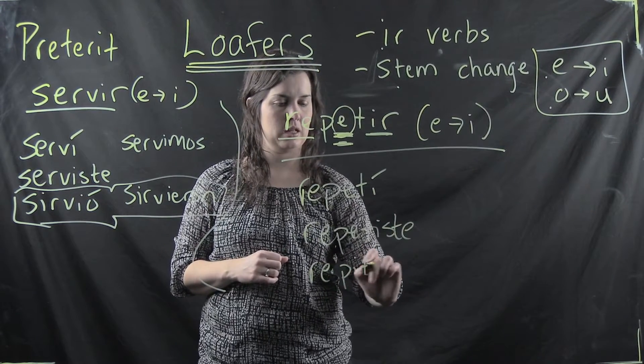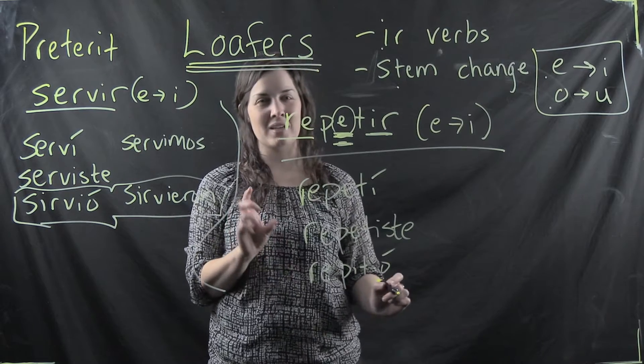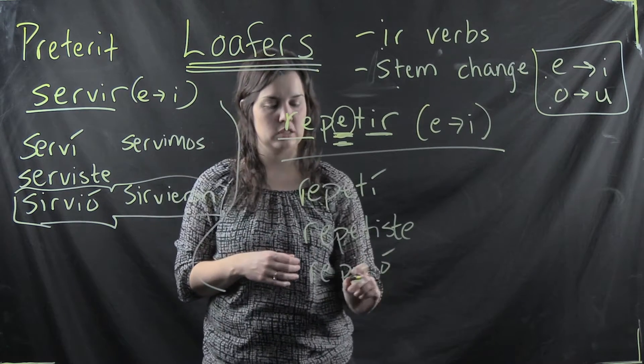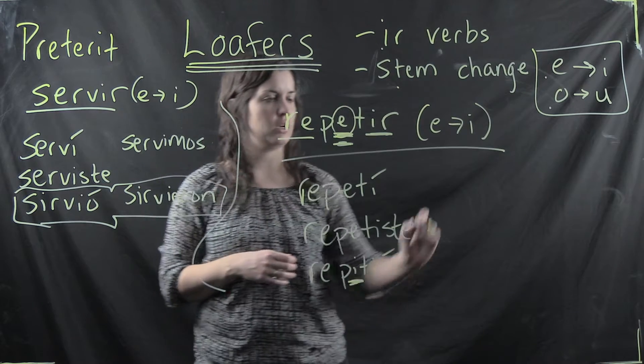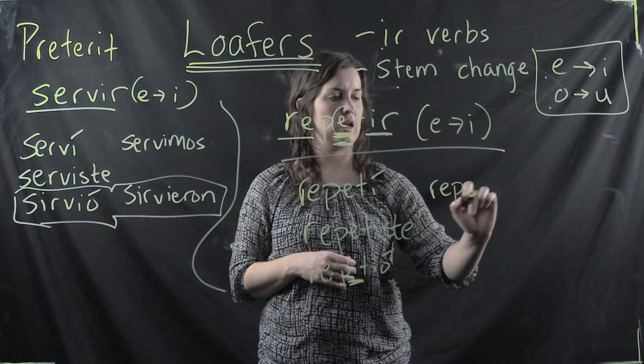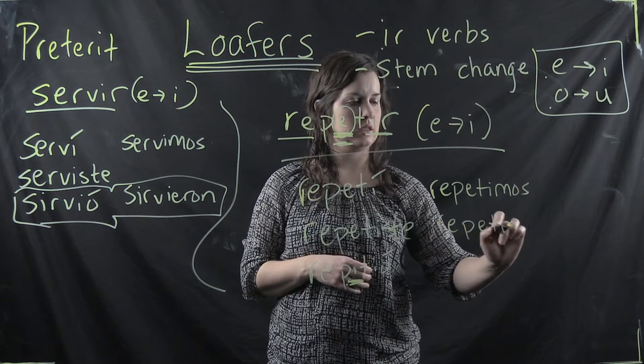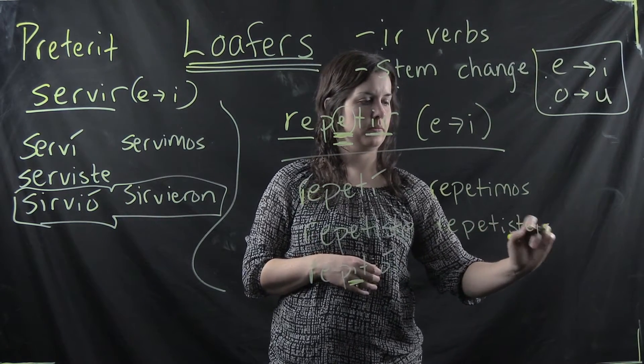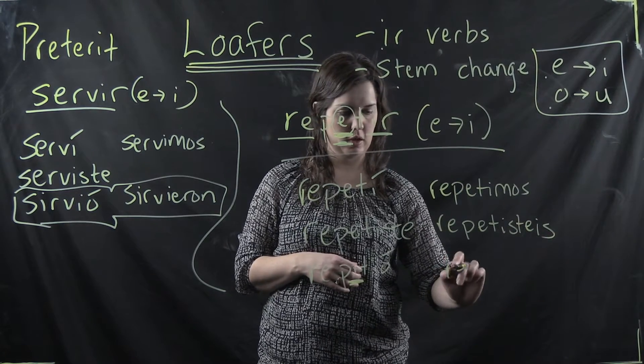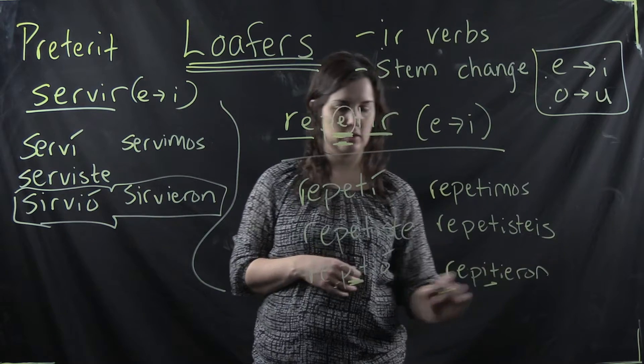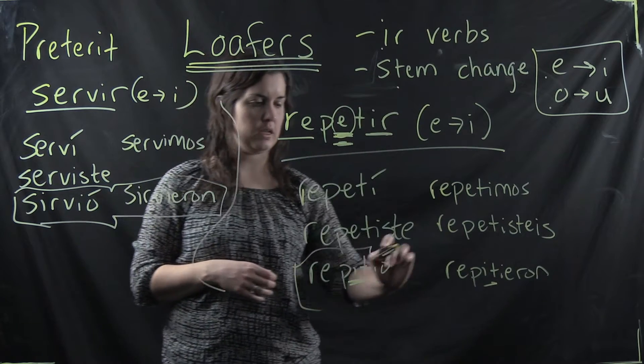So the E to I okay is going to be in that closest to the ending E. So you have repetí, repetiste, repitió, and I'm emphasizing the I. It's pronounced repitió. This is the accent syllable but that I is what I was trying to emphasize there. Repetimos, repetisteis, and repitieron. Again the I. So again you have stem change happening in the loafer.